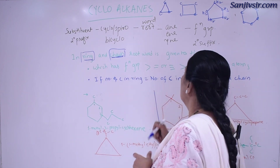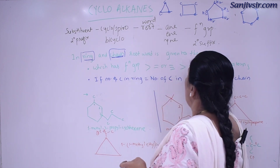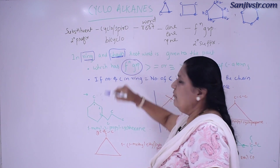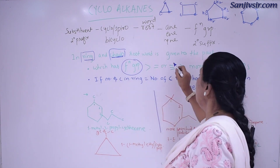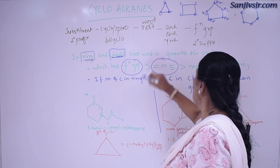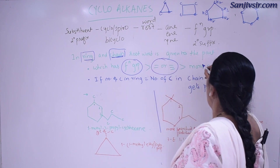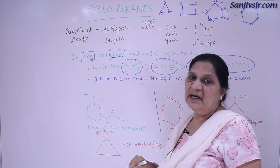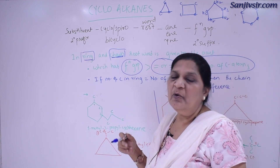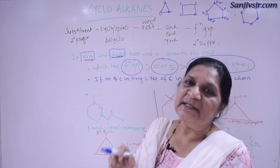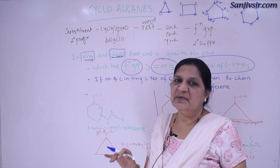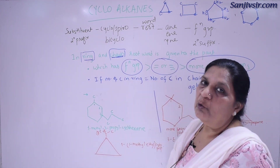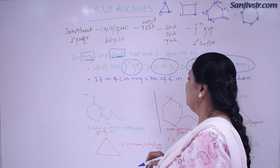First rule: the root word is given to the part which has either a functional group, or a double or triple bond, or the one which has more number of carbon atoms. Whether the side chain has more carbon atoms or the cyclo part has more carbon atoms — look at that — which will be given the root name, that we have to decide.